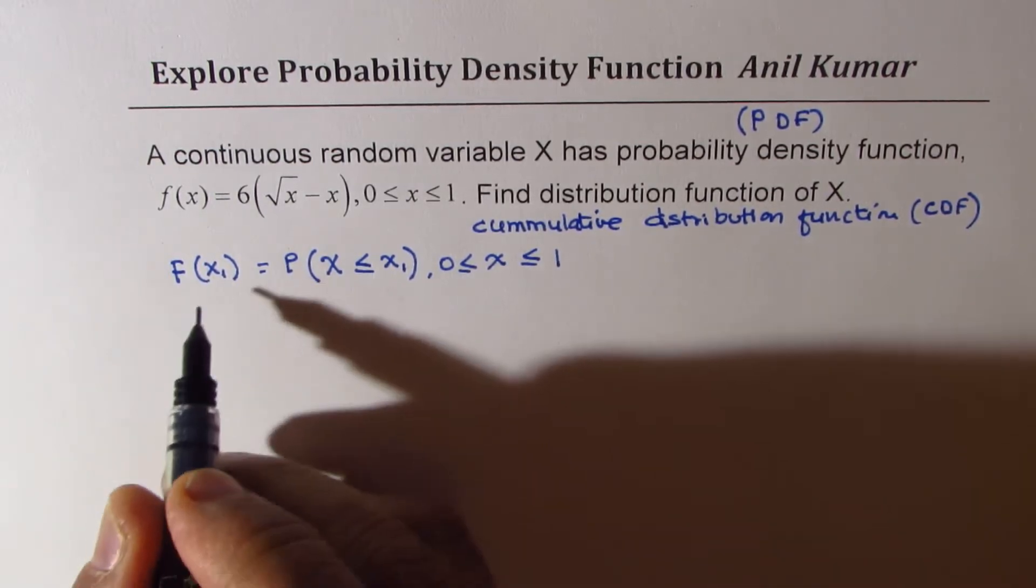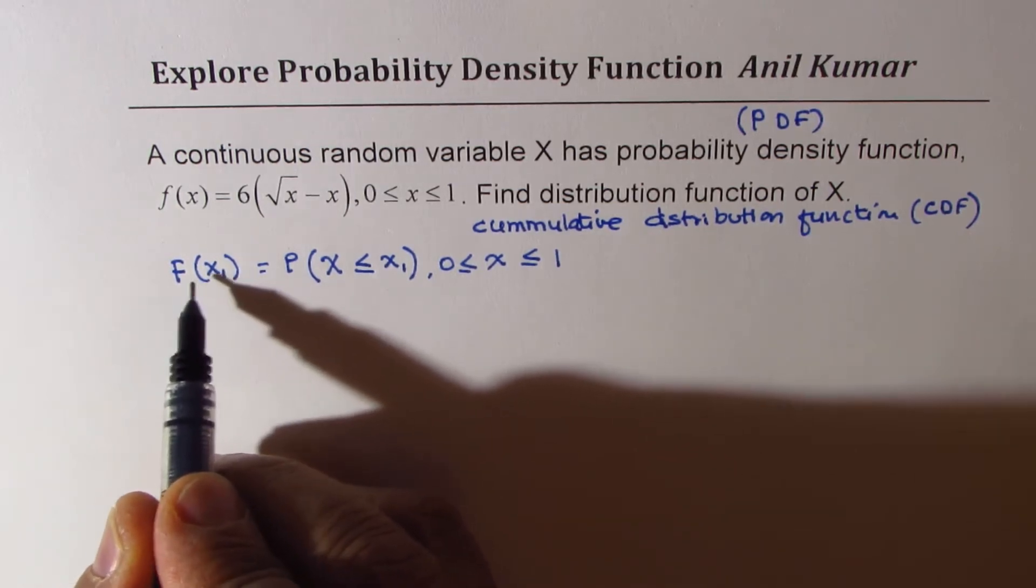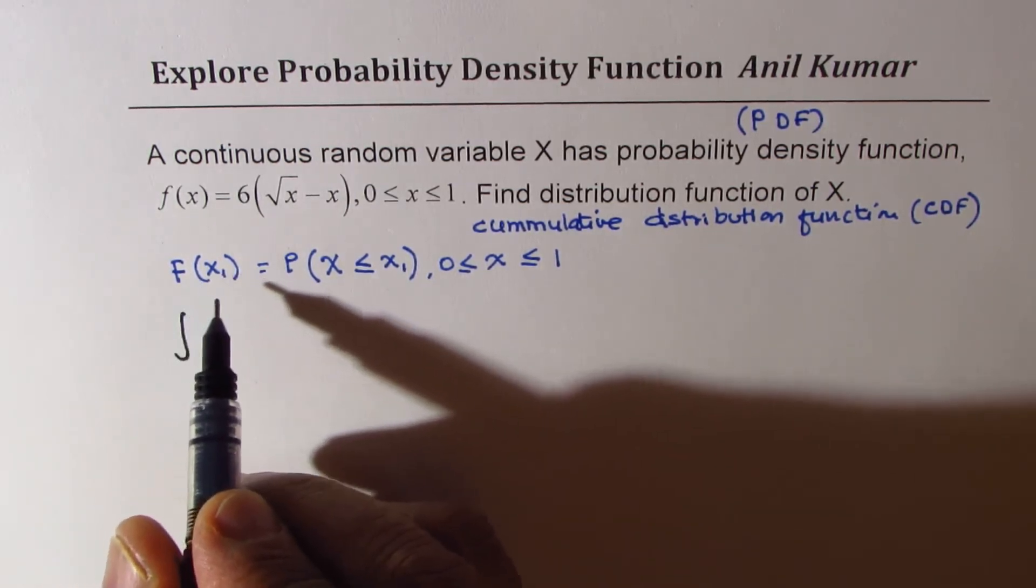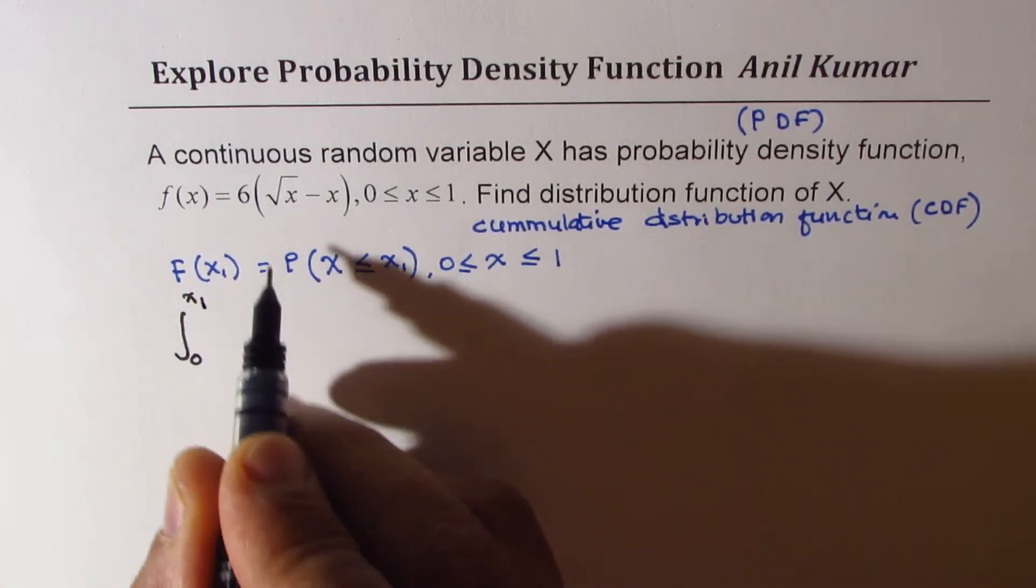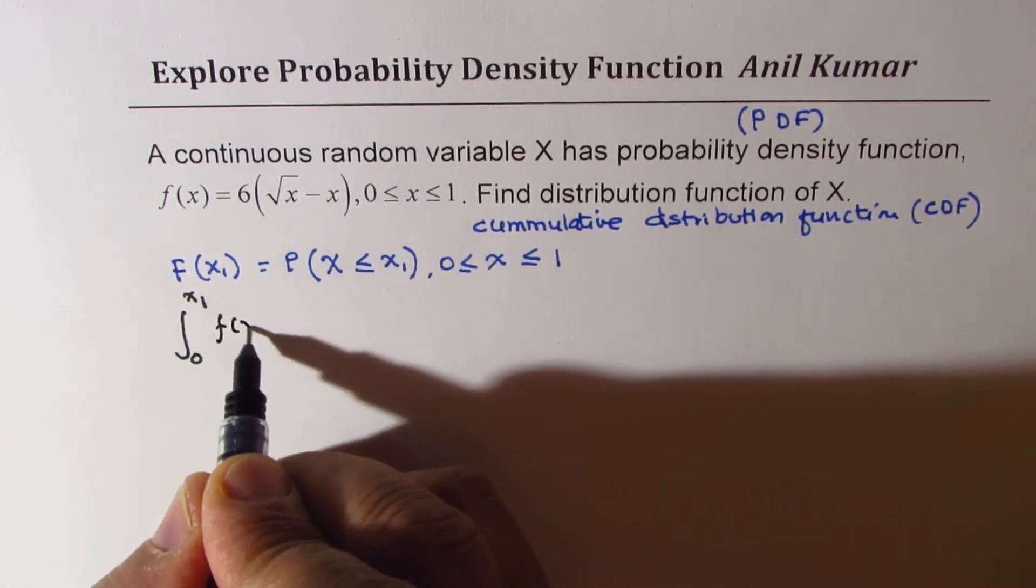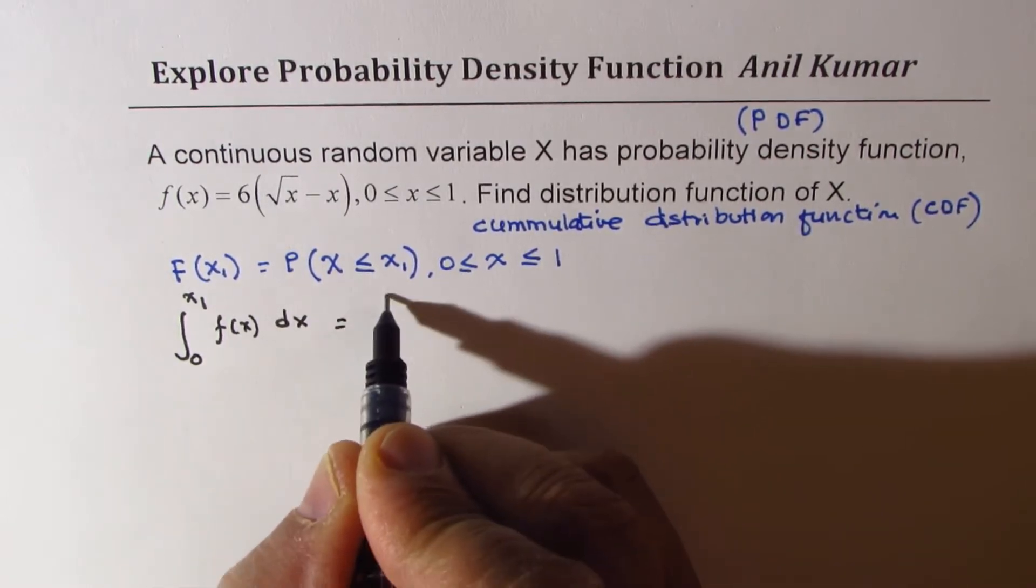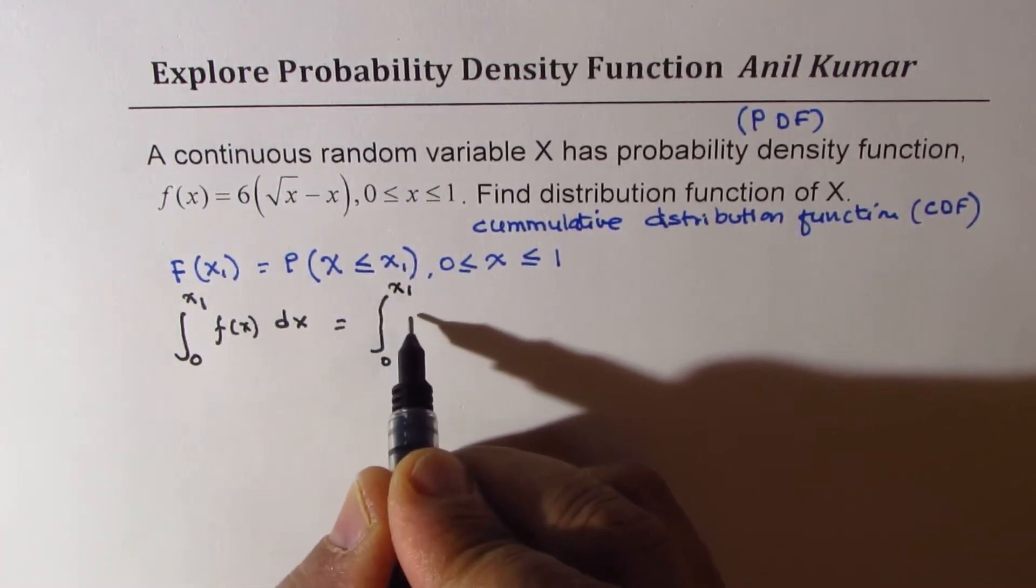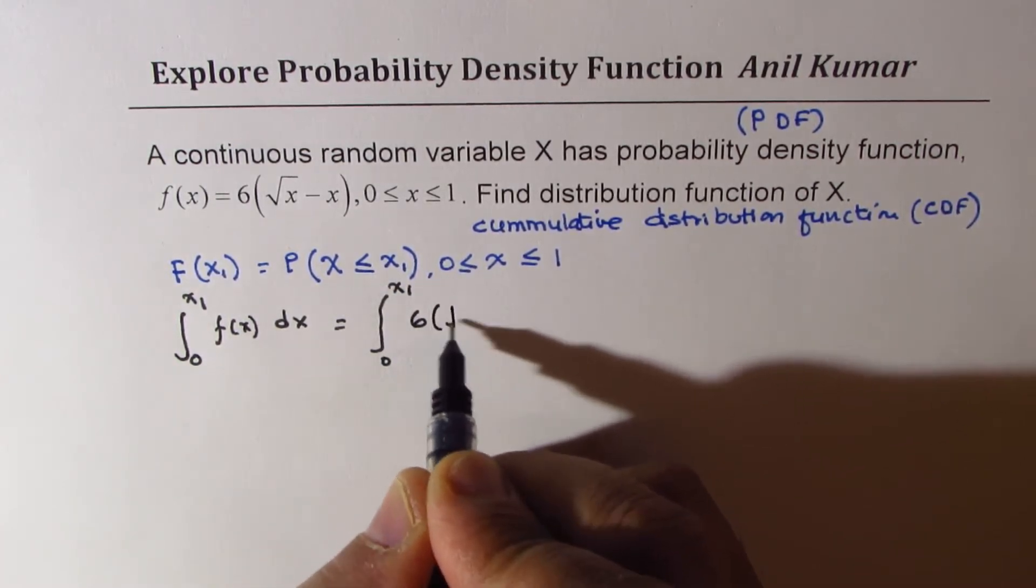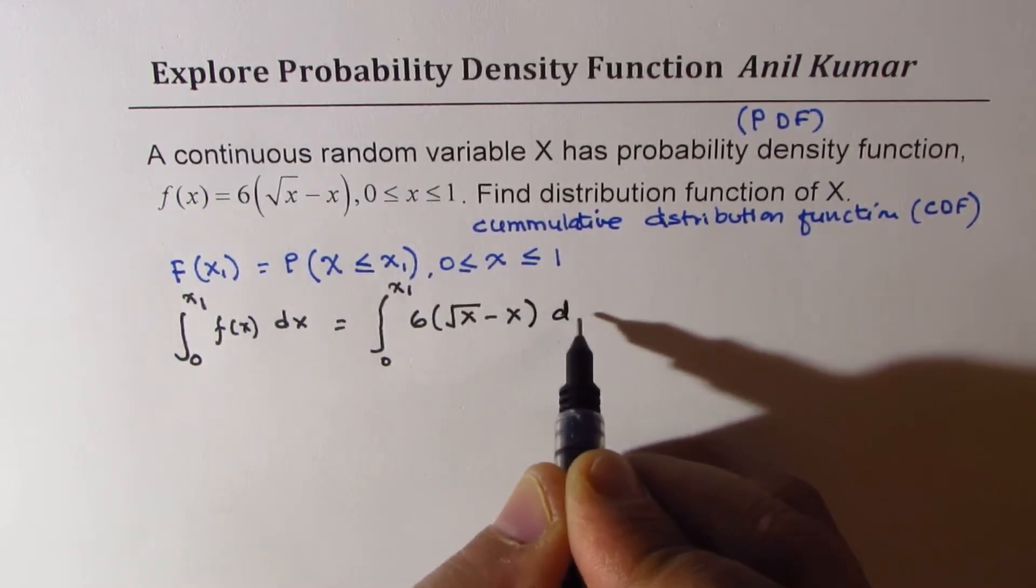So we could now write this as integral. This is anti-derivative. So we need to find the integral from 0 to x1 for the given function f(x) dx. Now, let's integrate this. So from 0 to x1, the function is 6 times square root of x minus x dx.